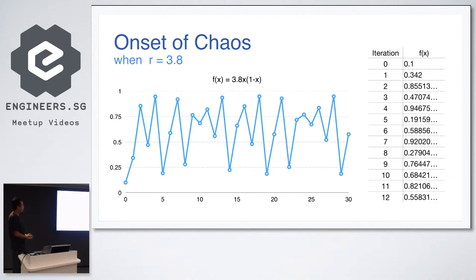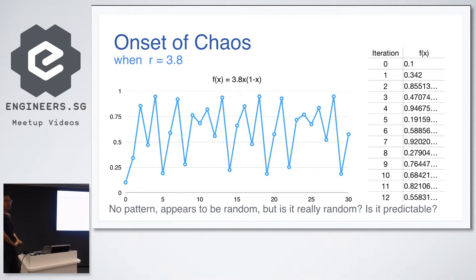Anyone can see a pattern here? Now we increase the r to 3.8. Anyone can see a pattern here? It turns out there's no pattern. So it appears to be, if you run this for longer iterations, you'll never discover a pattern. It appears to be random, but if you think it carefully, is it really random?